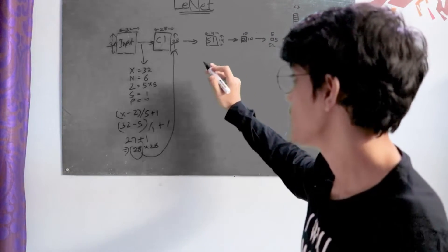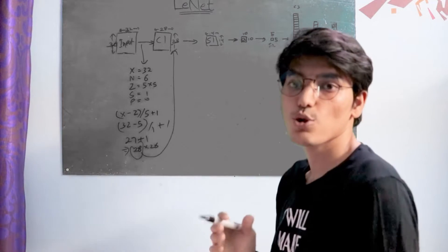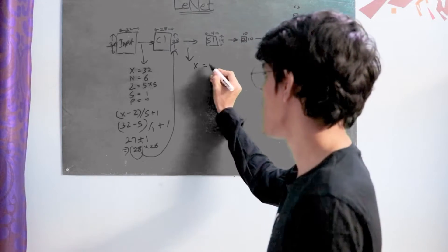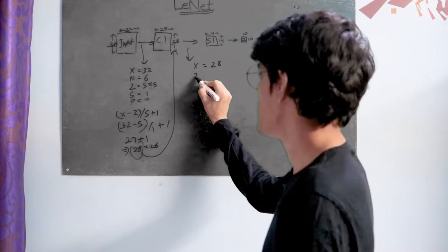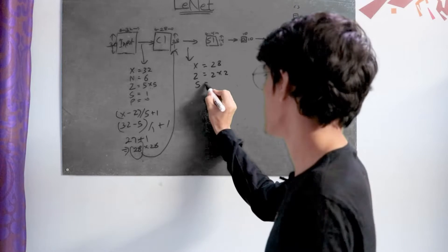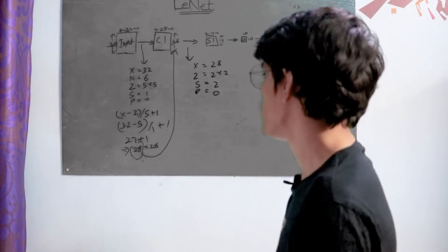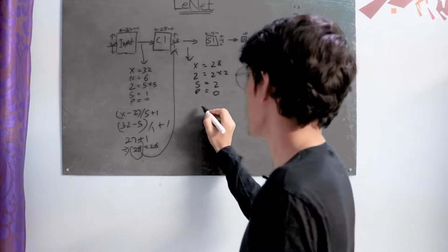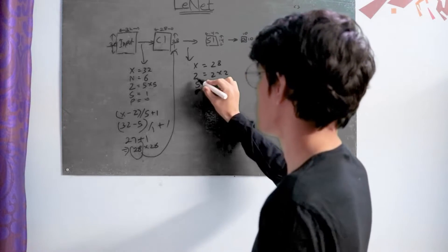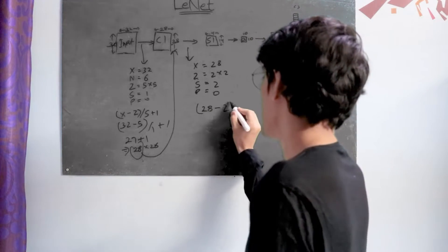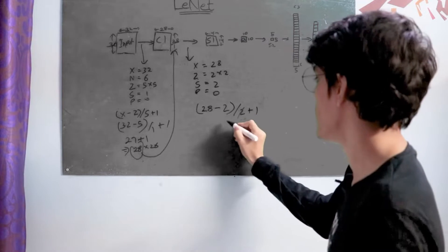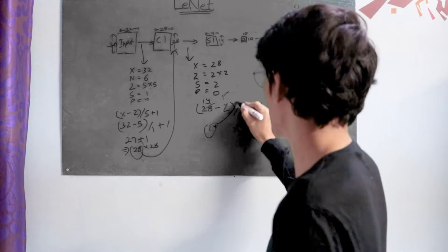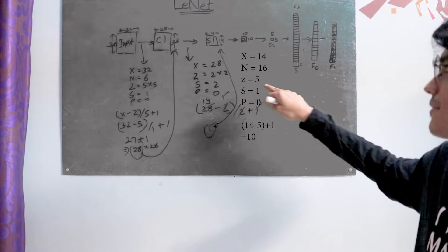Then we apply average pooling of size 2 x 2 with stride equals 2. Here are the calculations: we have previous input as 28 x 28 with kernel size 2 x 2, stride equals 2, and padding equals 0. By putting all of this in the formula we get the current input. It will be (28 - kernel) / stride + 1. We get 14 as our current input. Similarly, we calculate for the subsequent layers.